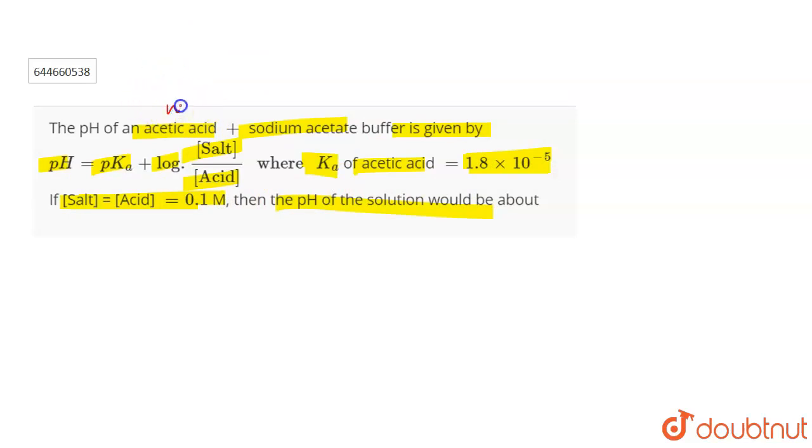Now, as this is an acetic acid, which is a weak acid, and sodium acetate, which is a salt of weak acid and strong base, or you can say that sodium acetate is the salt of the conjugate base of acetic acid, this forms an acidic buffer.